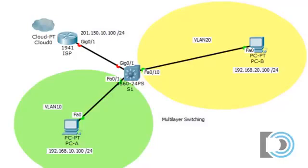This demonstration is on multi-layer switching done in Packet Tracer. In the CCNA we mostly deal with layer 2 switching where we configure VLANs on layer 2 switches, and if we want to communicate between those VLANs we need a layer 3 device like a router. But with multi-layer switching, all you need is a layer 3 switch like this 3560 switch, which can handle all of the switching duties, the VLANs, and also do routing.